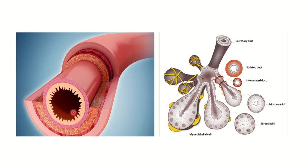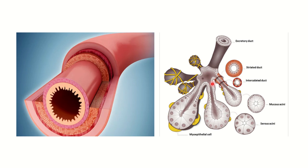We can see this is the gastrointestinal tract and the lumen of the gastrointestinal tract. On the other hand, here is a sample of the salivary gland — we can see its duct is narrower than that of the intestine. The lumen of other glands is relatively small and there are no extra substances in their lumen.